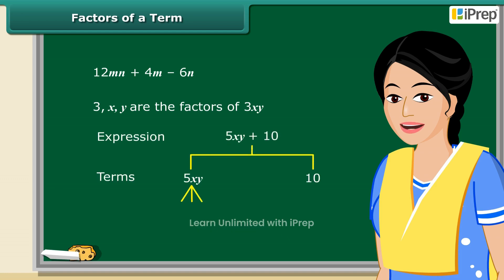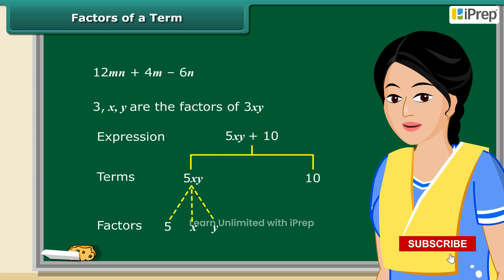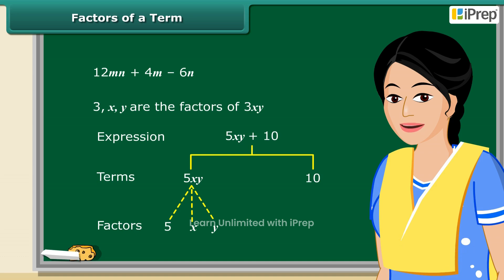In the tree diagram, dotted lines are used for factors and continuous lines for terms. Remember, the factors cannot be further factorized.